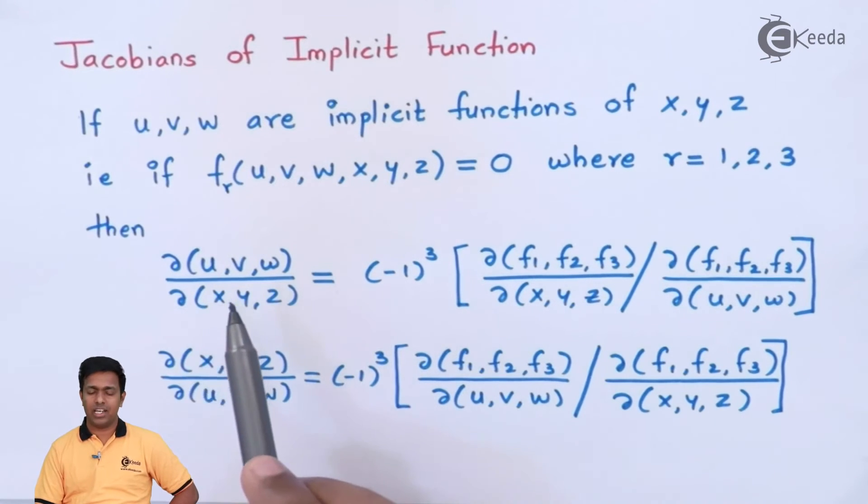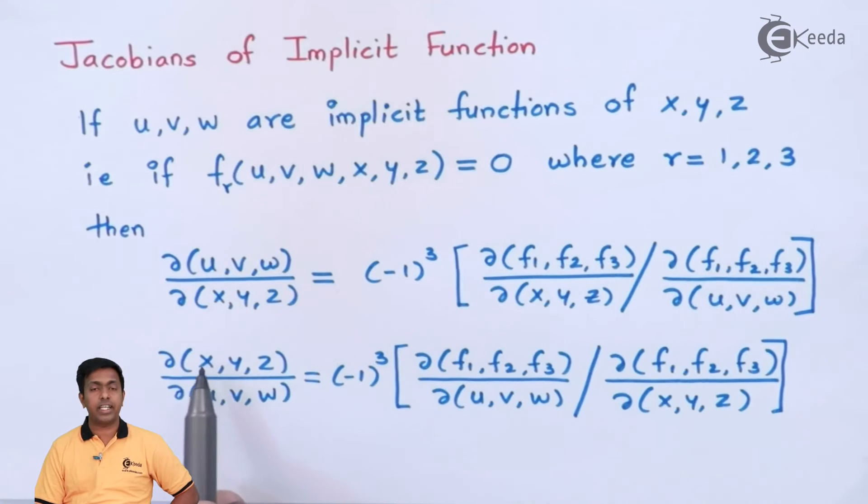Now same logic I will use over here. Here I am differentiating x, y, z with respect to u, v, w. So I will take this x, y, z in the denominator and this u, v, w in the numerator. So the formula will be minus 1 cube, then Jacobian of f1, f2, f3 with respect to u, v, w divided by Jacobian of f1, f2, f3 with respect to x, y, and z.